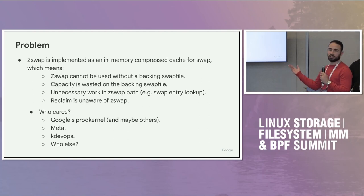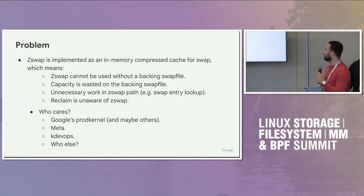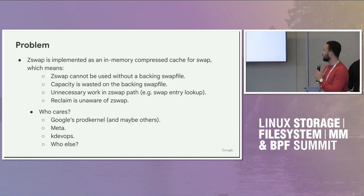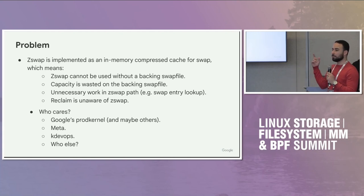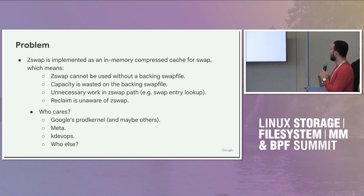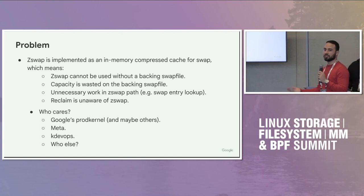So who cares about all this? Google cares, obviously, because we have been using ZSwap without backing swap files in our fleet for over a decade now, so we can say that it is a valid use case. There is some interest from Chrome OS and Android. Meta is interested, especially in terms of losing capacity on swap files when they use ZSwap. KDEV ops also have a similar thing to Google, where they use ZSwap with a swap file but the intent is to never actually use the swap file — it's just there to allow them to use ZSwap.